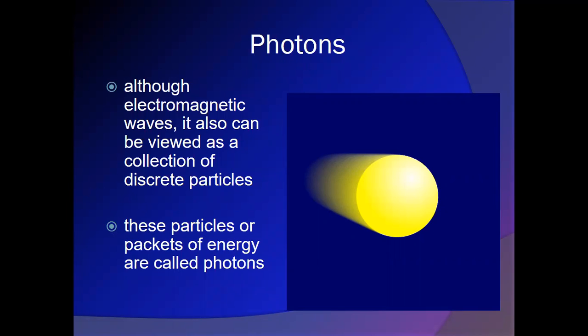Not only do photons have a particle and wave nature, but matter on a very small scale also demonstrates a wave nature. We get into a little bit of quantum weirdness when we get to the very small scale. We have to visualize light as both a particle and as a wave.